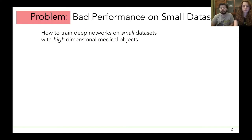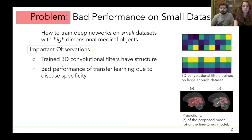In our work, we address the problem of semantic segmentation on small datasets of high-dimensional medical objects. Our solution is based on several crucial practical observations. The first is that when we do have a large sample, we can notice that three-dimensional convolutional filters after training have a very clear structure. The second observation is that transfer learning, a common technique used in deep learning, works quite poorly if two medical datasets differ in crucial properties such as disease or MRI modality.